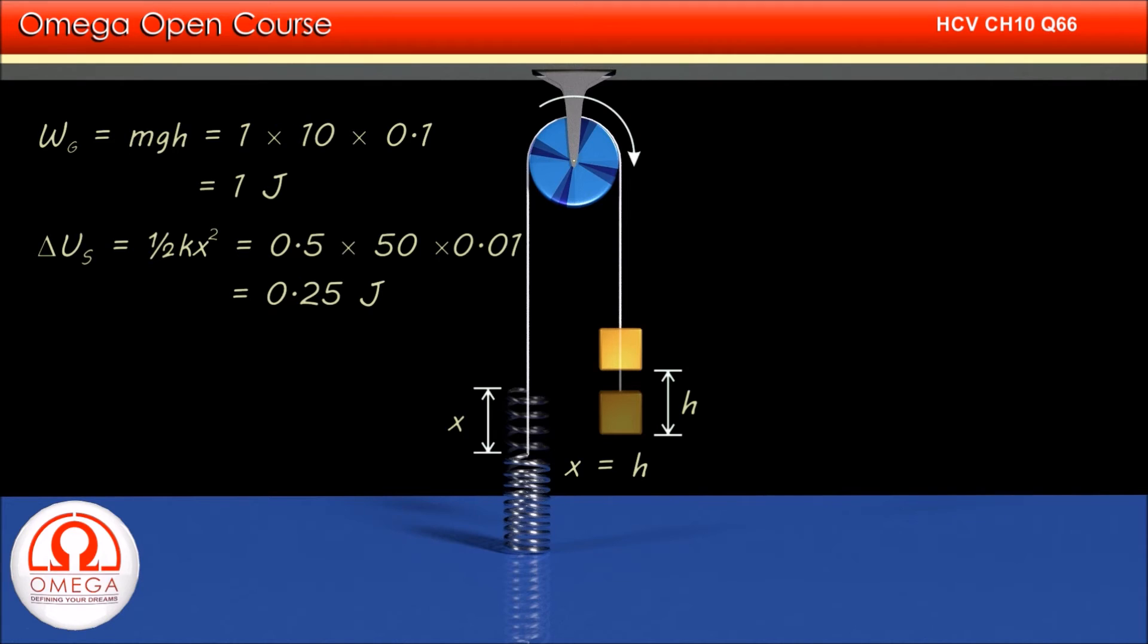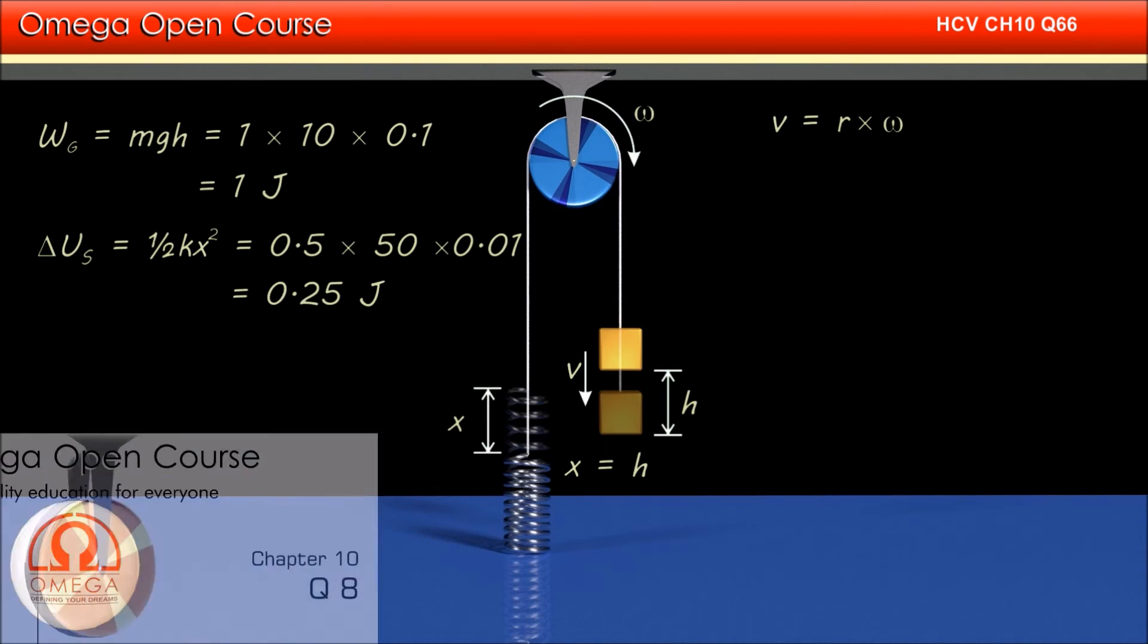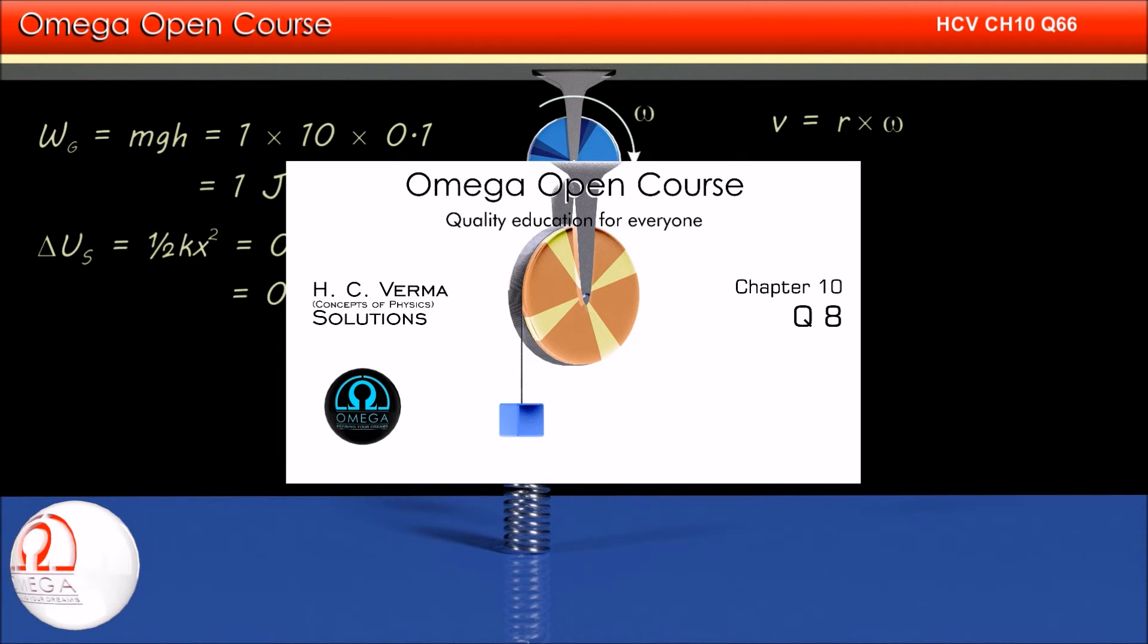Let the angular speed of the pulley be ω and the linear speed of the block be v. Since the string is not slipping over the pulley, v = Rω. If you want to know how this result is derived, watch the solution to question 8 of this chapter. The link is shown on screen and in the description.